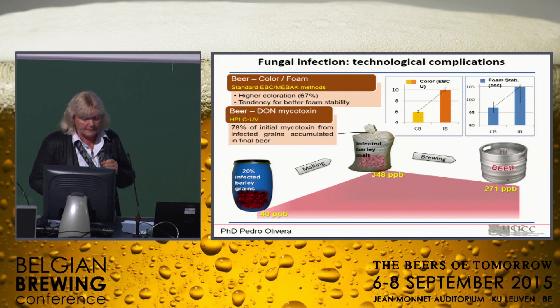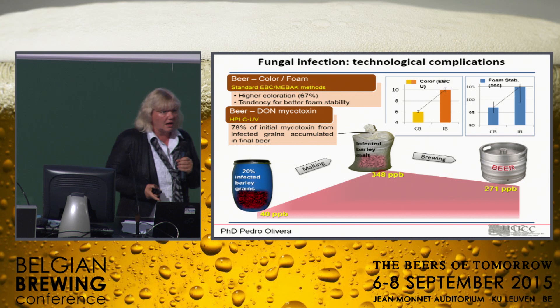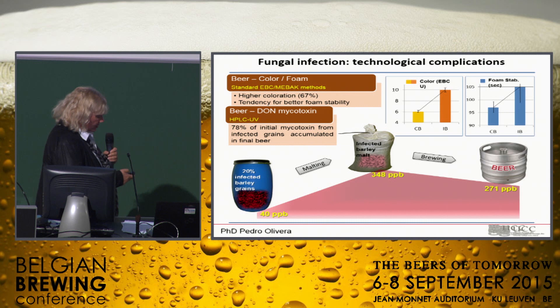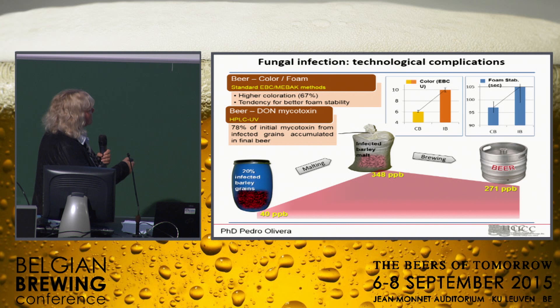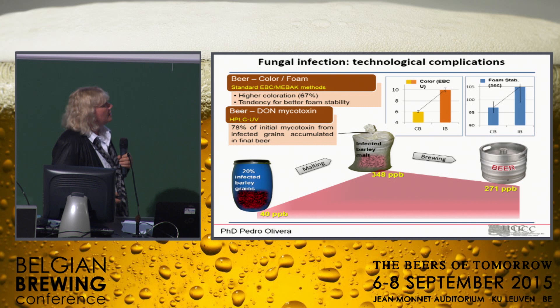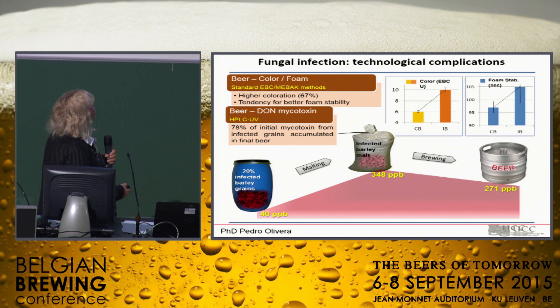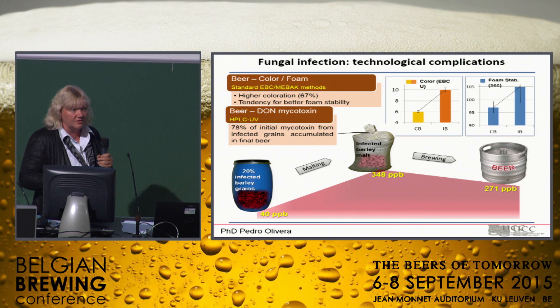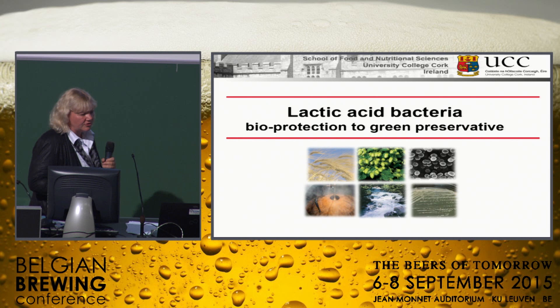What we did then was take this infected grain and make beer from it. What we found was that mycotoxins are heat stable and also water soluble. Quite shockingly, from your infected barley about 80% ended up in your beer. Beer quality was also affected in other ways, like higher color, but you got better foam stability — which isn't surprising because you had a lot more peptides.